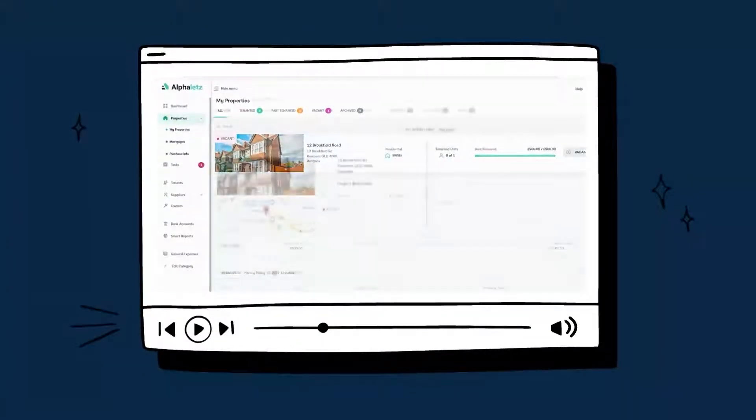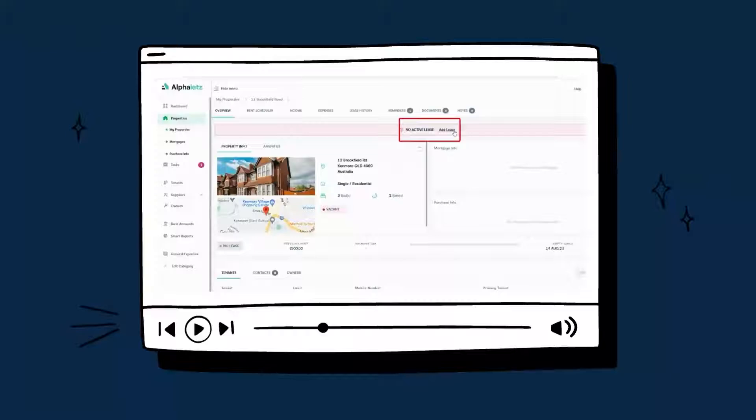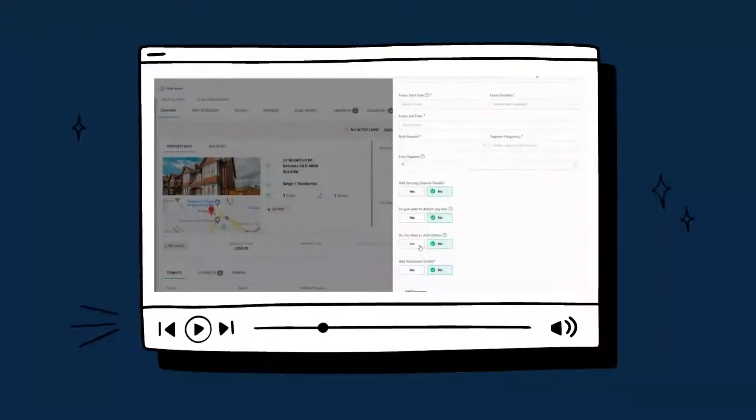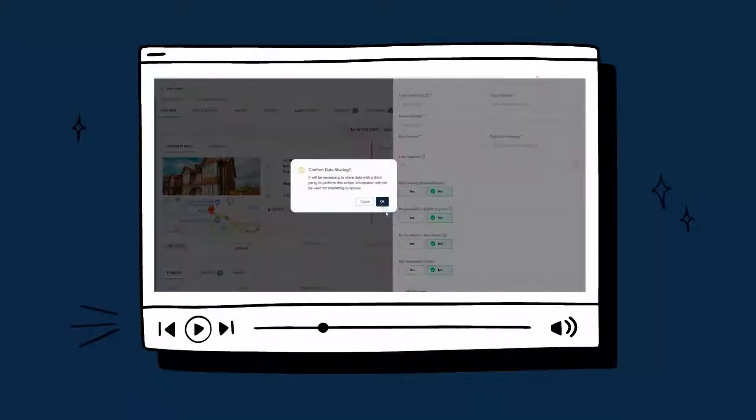So, how does it work? It's simple. Head to Alphalets' dashboard and add your property and its corresponding lease, and then when prompted, tick the checkbox that asks if you want to add utilities to the lease.